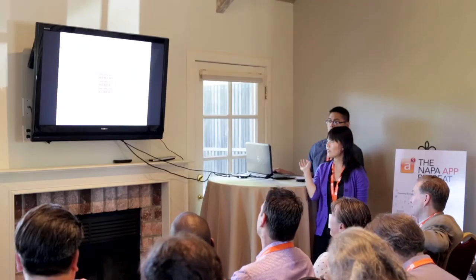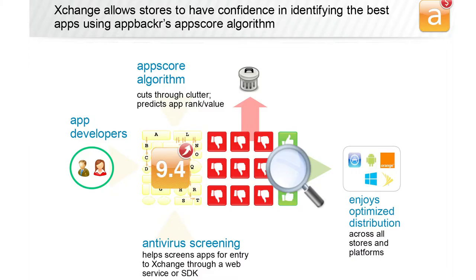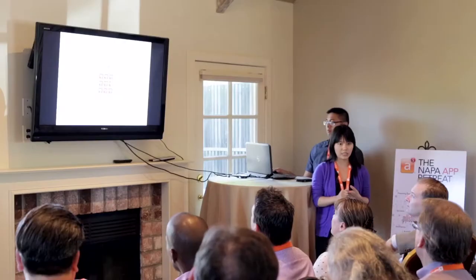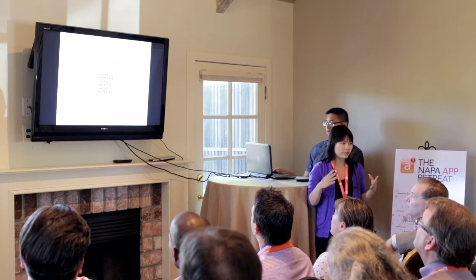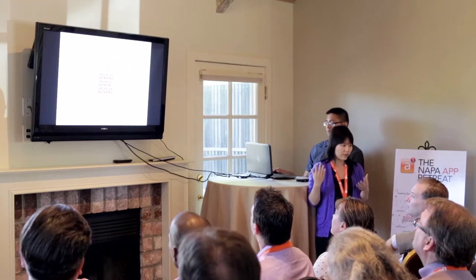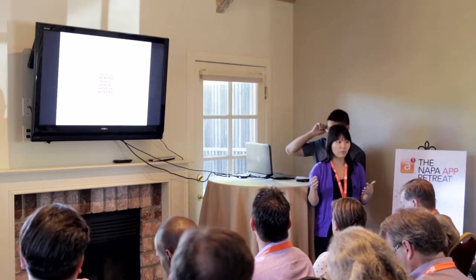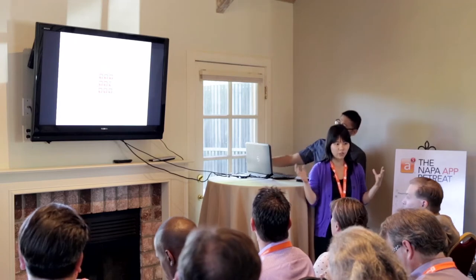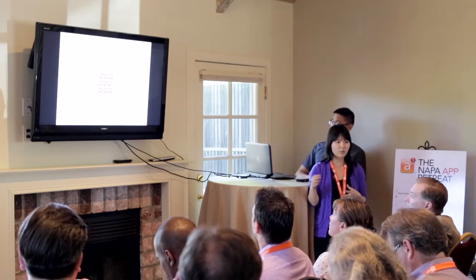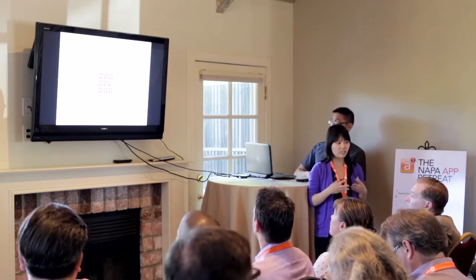I wanted to start with the first slide that describes the conception of the AppScore and give you a little process for how we apply it and what our rationale was for coming up with the reason why the AppScore was needed. When we first saw the iOS store and the Google Play store just growing exponentially every day, every month, with new apps being added, we were seeing a really big discovery problem.